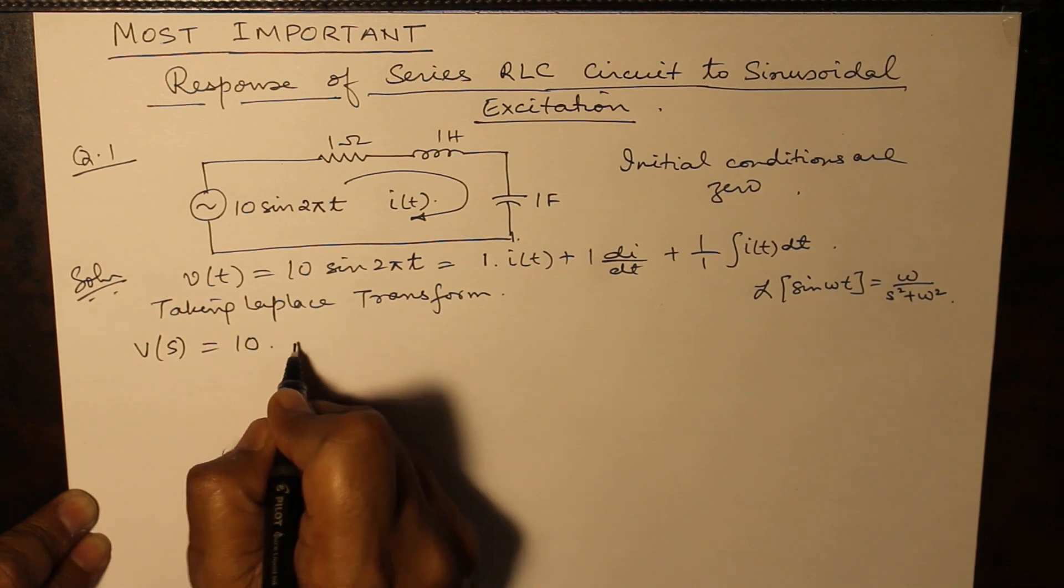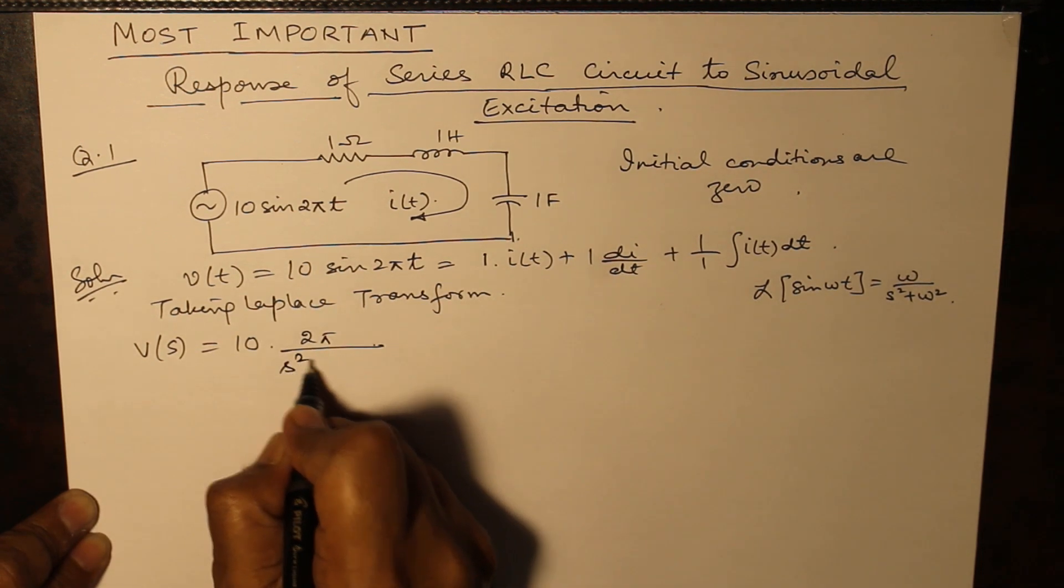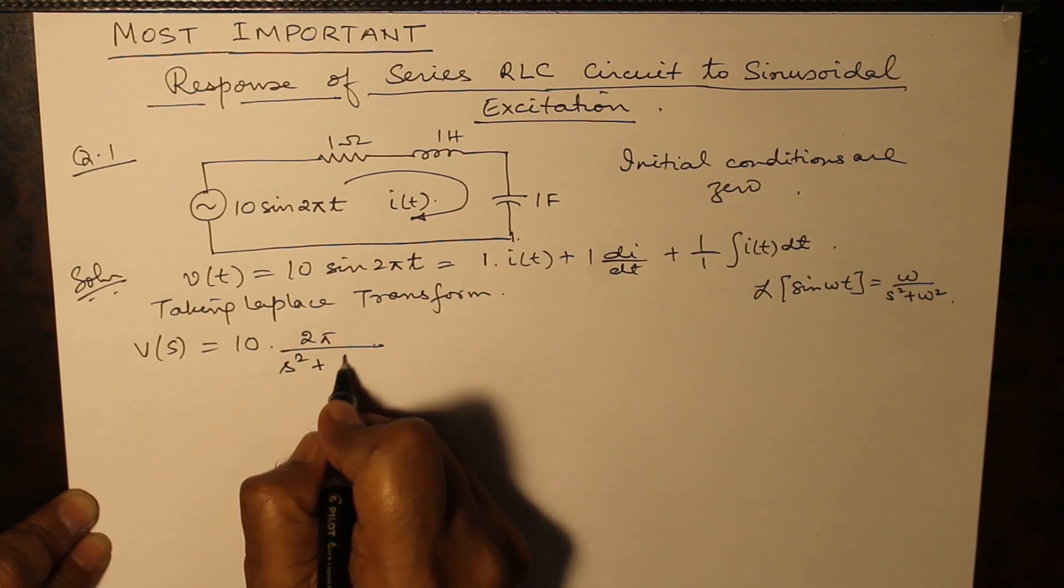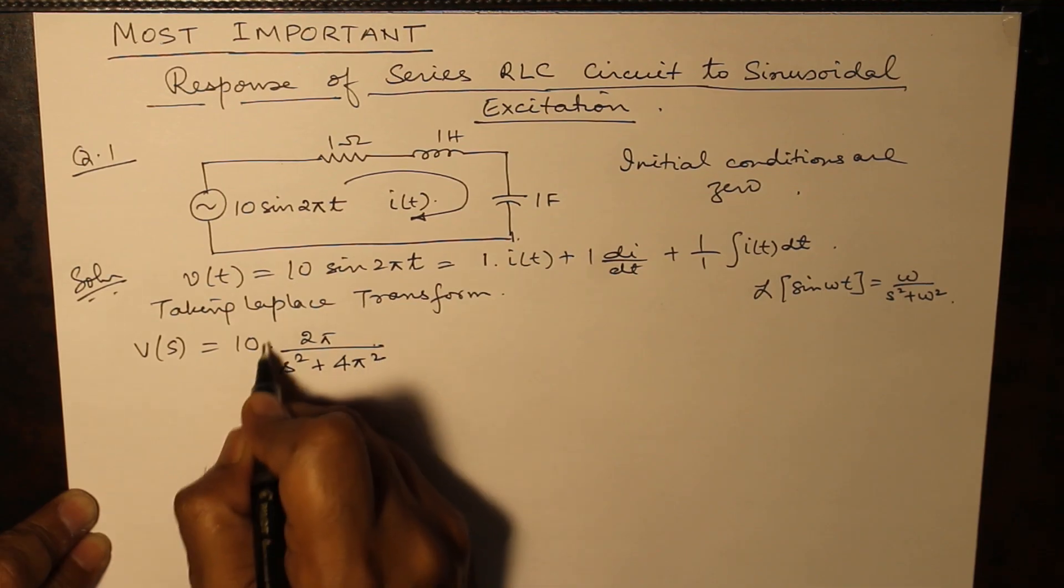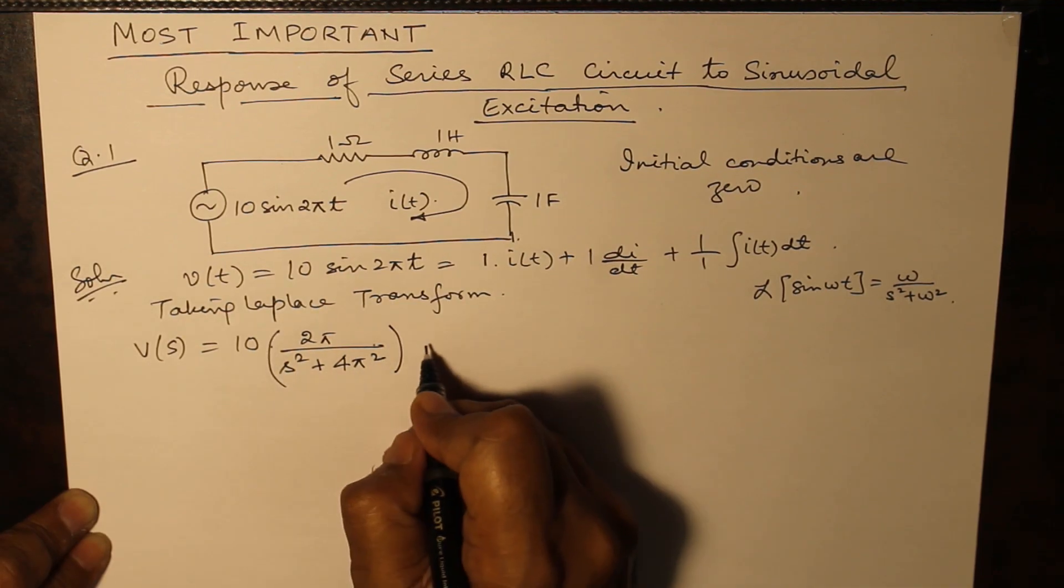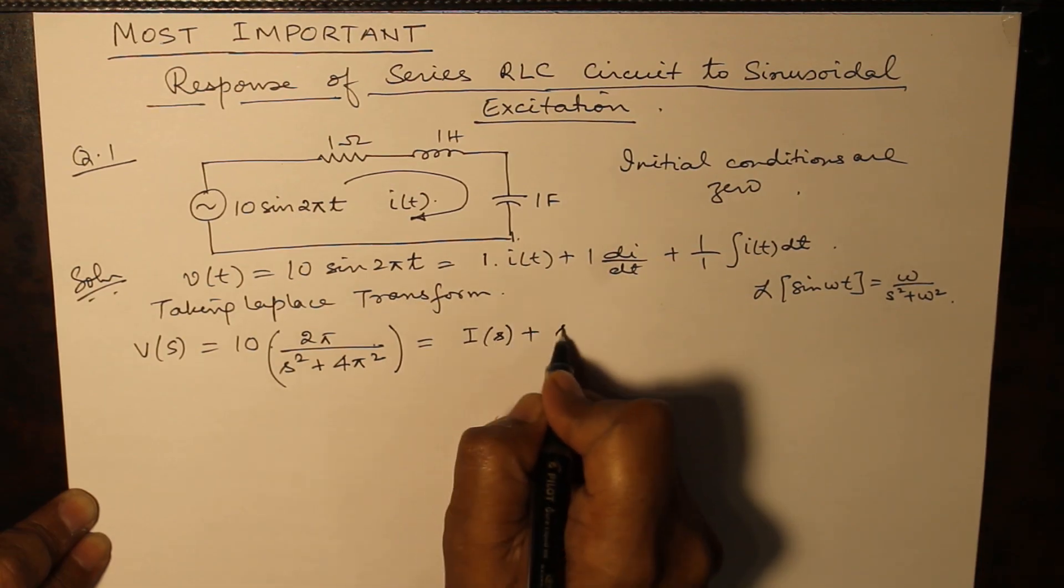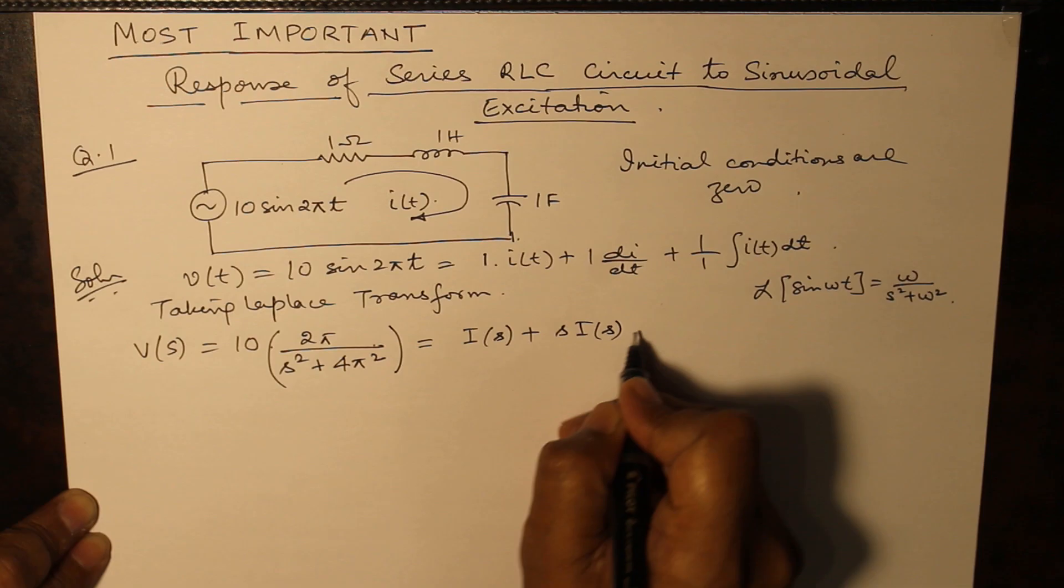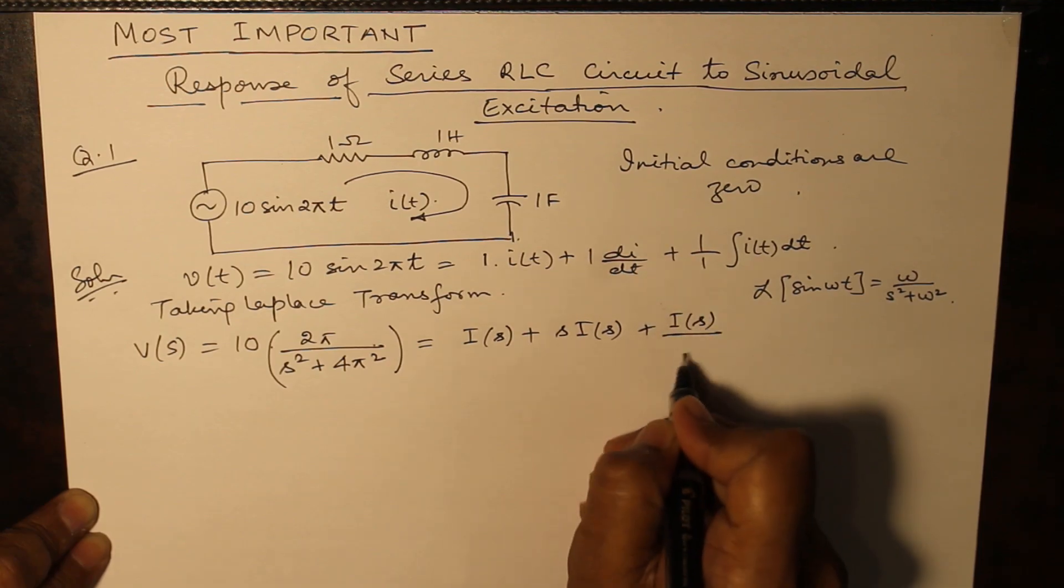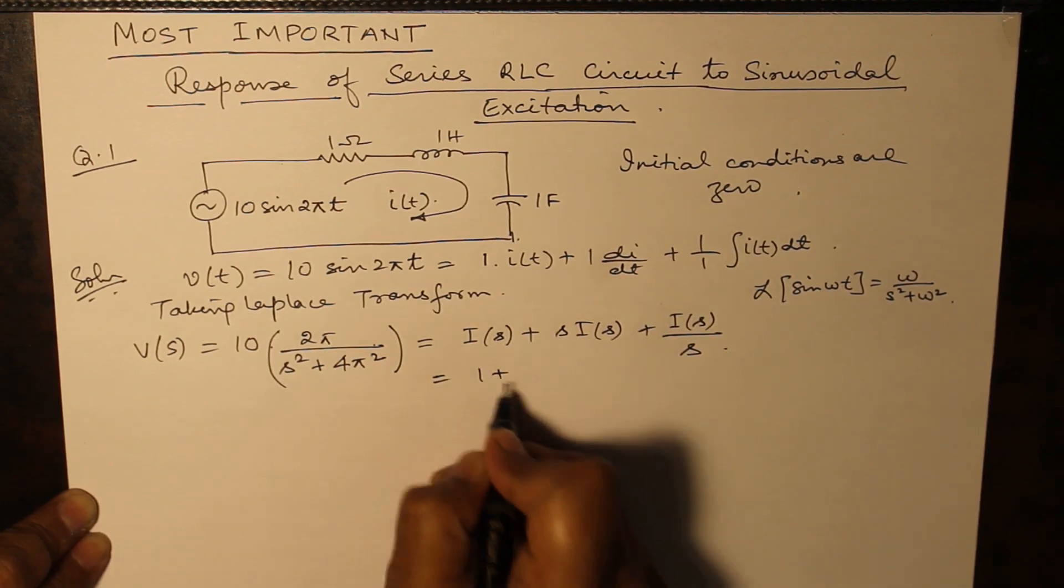10 times 2π over s² plus 4π² is given by I(s) plus sI(s) plus I(s) over s, which becomes...